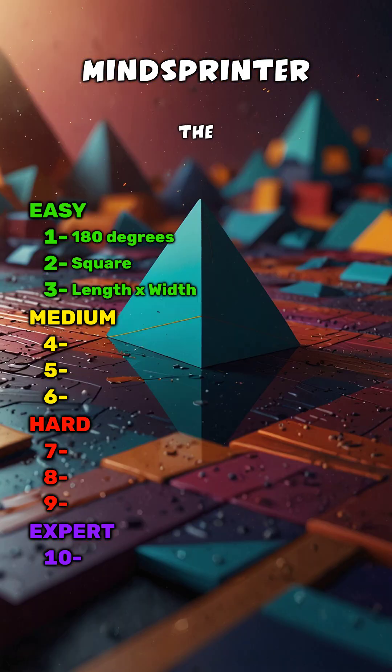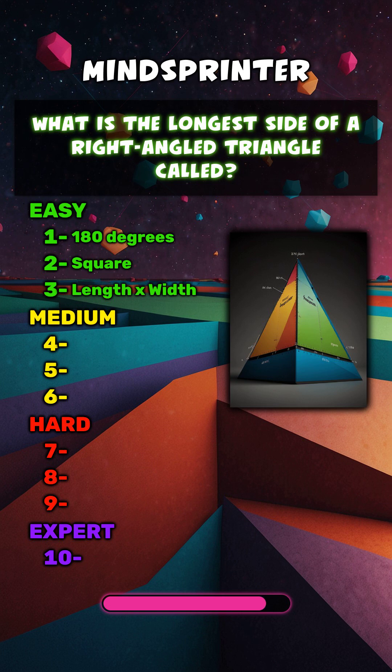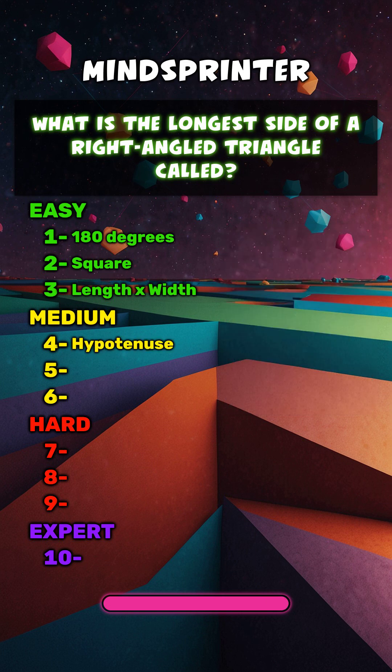If you got the first three right, like the video. What is the longest side of a right-angled triangle called? Hypotenuse.